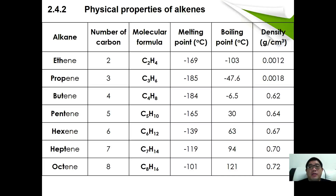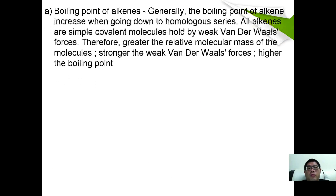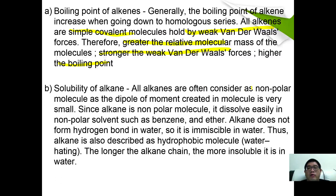A little bit about physical properties: generally, going down the group, melting point, boiling point, and density all increase. The boiling point of alkenes increases because all of them are simple covalent molecules held by weak van der Waals forces — greater molecular mass means stronger intermolecular forces and higher boiling point. As for solubility, all alkenes are non-polar, so they dissolve easily in non-polar solvents such as benzene and ether, they do not form hydrogen bonds with water, so they are immiscible with water — making them hydrophobic molecules.